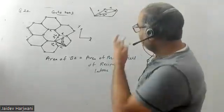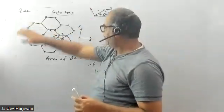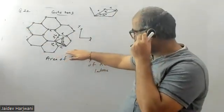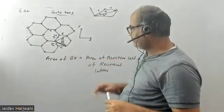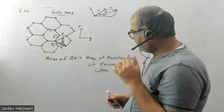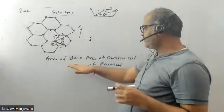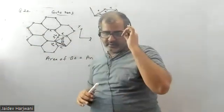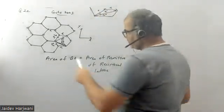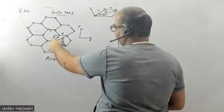Hello students, let us see this question from GATE 2023, question number 22. In this question they have given a honeycomb lattice and are asking what is the area of the Brillouin zone. For that, they have given the lattice parameters a1 and a2. We know the area of the Brillouin zone is the area of the primitive cell of the reciprocal lattice. However, in this question a1 and a2 are not the primitive lattice vectors.